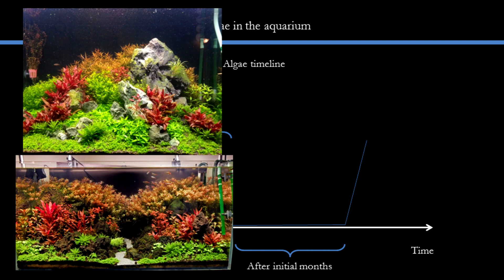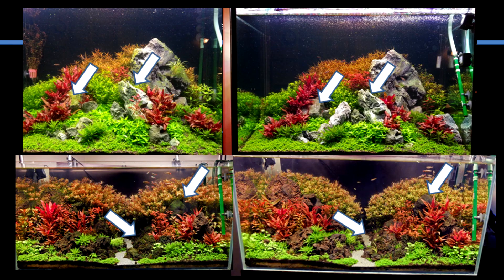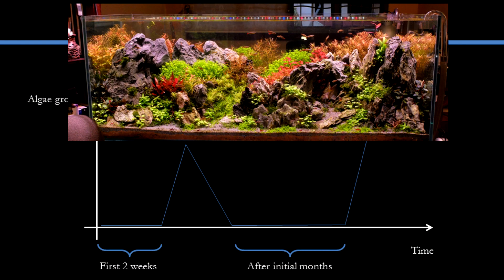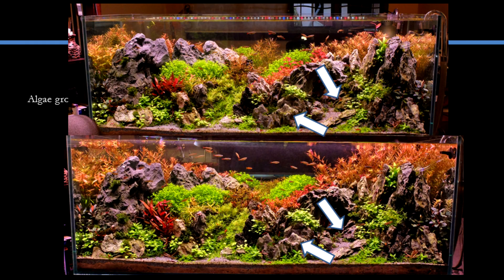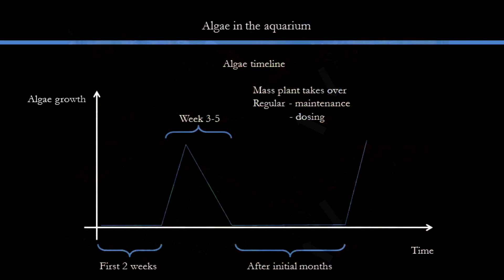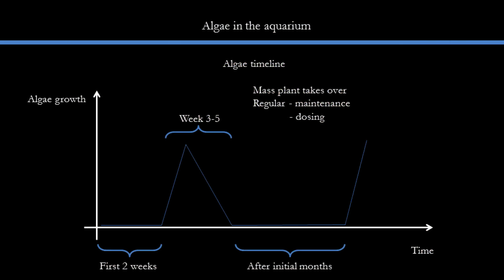These are a couple of my tanks at the algae bloom period during about the six to seven week mark, and these are the tanks after two months after things have stabilized. This is another one I set up during March this year, and I kept it pretty stable — so even during the algae window, there is barely any visible algae. And this is the tank today in its stabilized form.